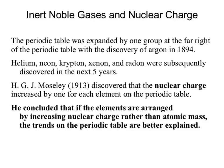As we continue to add information, Moseley in 1913 discovered that nuclear charge increases by one for each element on the periodic table. Well, why didn't Mendeleev look at nuclear charge? Did he have the technology? How many subatomic particles were known in the time of Mendeleev? None — there weren't electrons, protons, and neutrons. There wasn't even charge established or proven at that point. Once charge was discovered by Thompson around 1895, then we could start to look for nuclear charge.